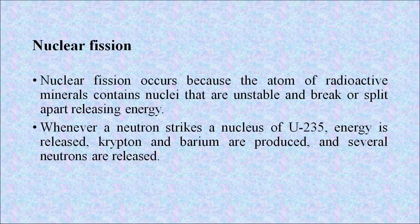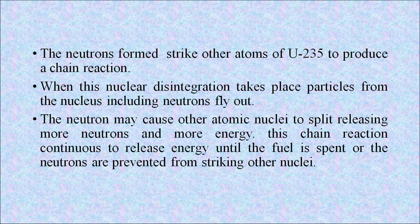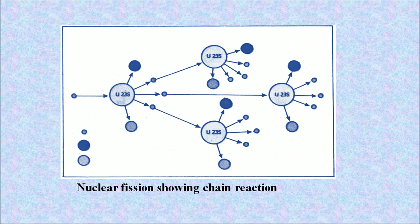Nuclear fission occurs because atoms of radioactive minerals contain nuclei that are unstable and split apart, releasing energy. Whenever a neutron strikes a nucleus of U-235, energy is released, krypton and barium are produced, and several neutrons are released. These neutrons strike other atoms of U-235, producing a chain reaction. When this nuclear disintegration takes place, particles from the nucleus including neutrons fly out, the neutrons cause other atomic nuclei to split, releasing more neutrons and more energy. This chain reaction continues to release energy until the fuel is spent or the neutrons are prevented from striking other nuclei.